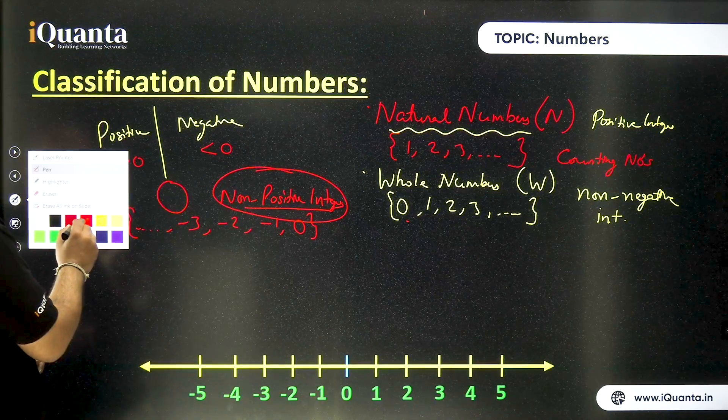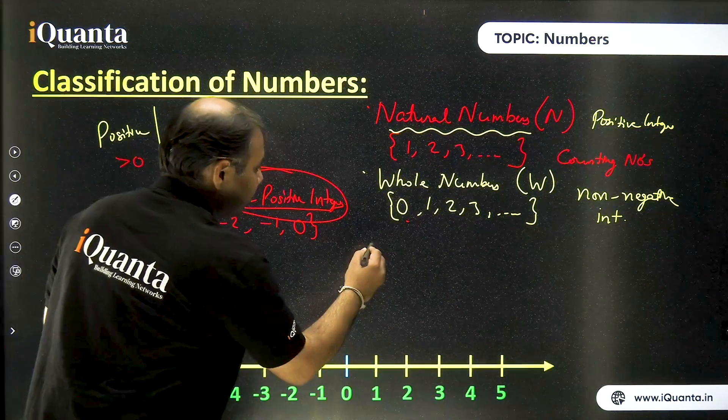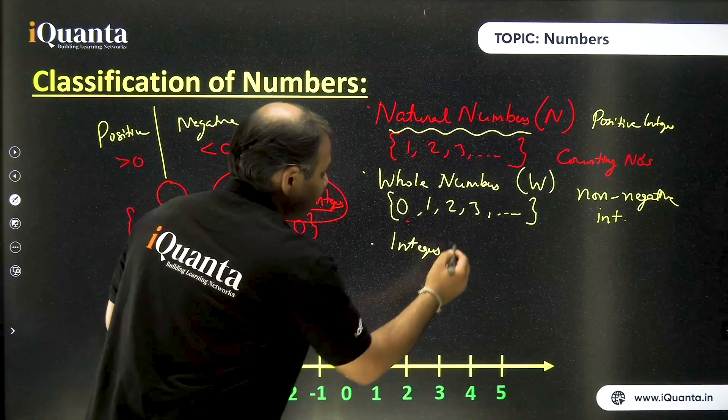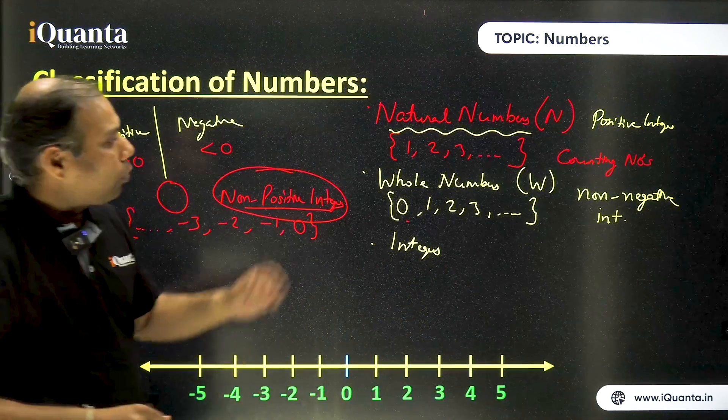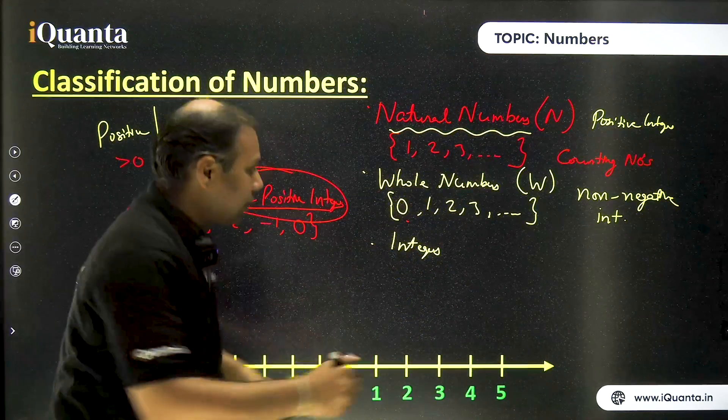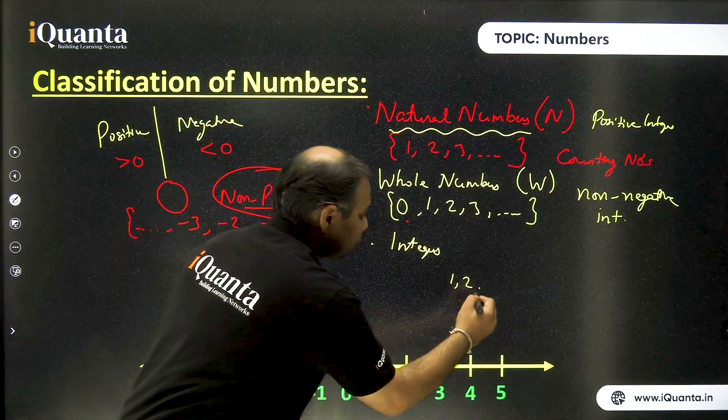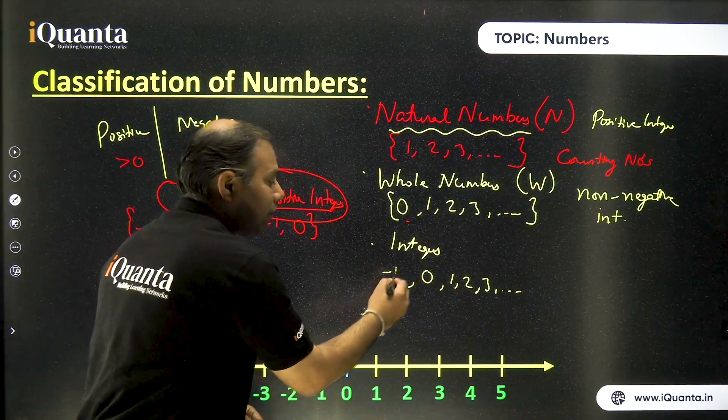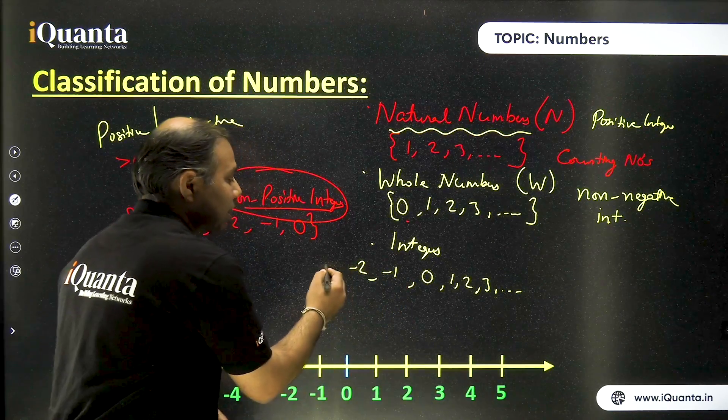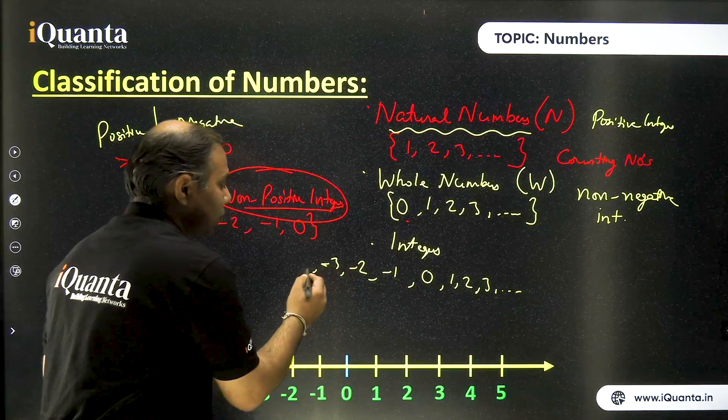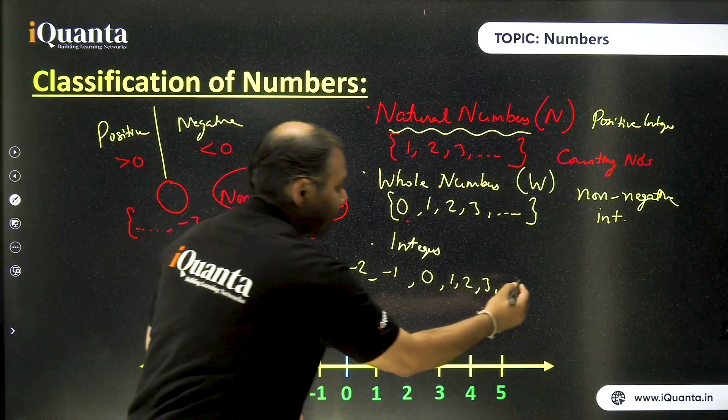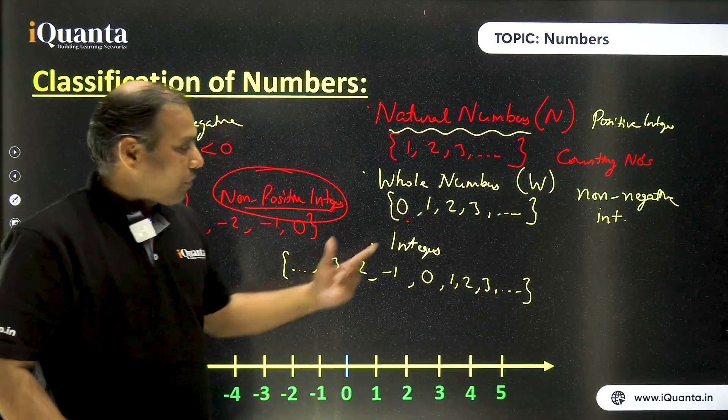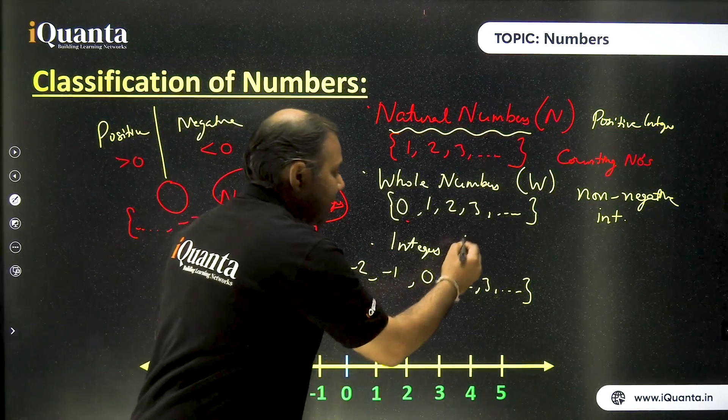So the next category of numbers is integers. So which is quite obvious now. Integers will include all these natural numbers that is positive integers. That is one, two, three, and so on. It will include zero and it will include negative integers also. That is minus one, minus two, minus three, and so on. So this complete set of numbers will be called set of integers. Now symbol for this integers is Z.